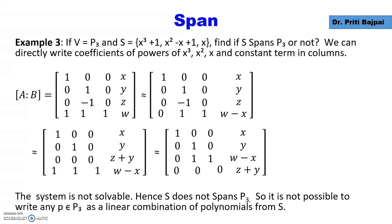Now let's see if S spans P₃. We write the coefficients of all powers of x³, x², x, and the constant term in columns. In the rightmost column we take X,Y,Z,W as our variables. When we solve, we can see the final matrix is not solvable, as in the last row in matrix A we have all zeros whereas the right hand side has a variable.